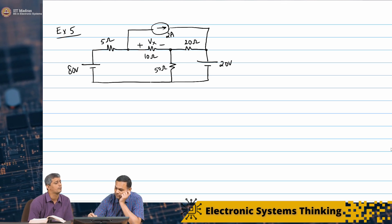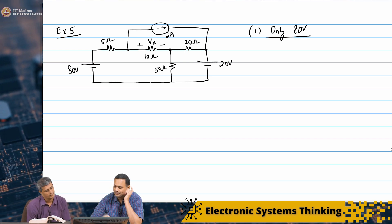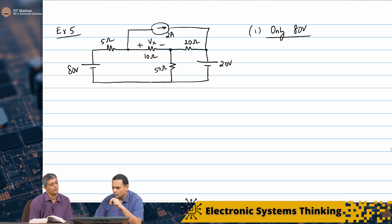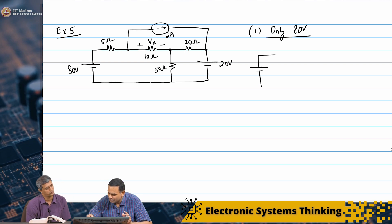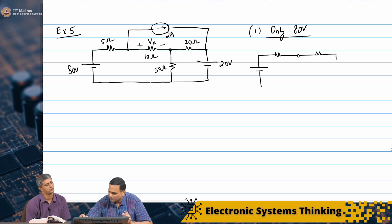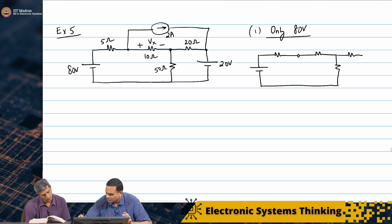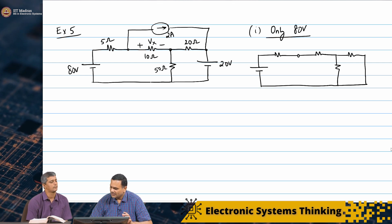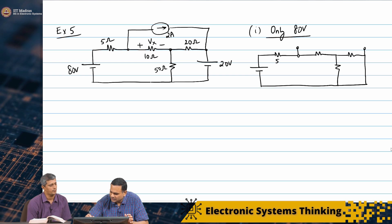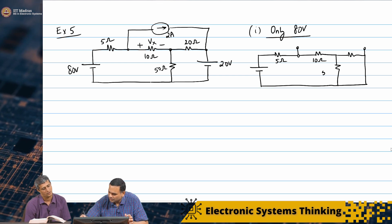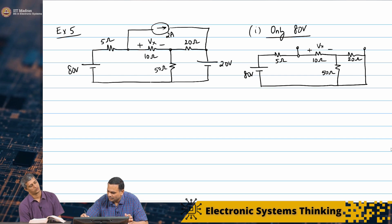So let us only keep the 80 volt source first. The 2 amp becomes an open circuit, and the 20 volt becomes a short circuit. My network becomes a little bit simpler. This is my primary loop — that does not change. The 20 volt becomes a short circuit, and the current source is an open circuit. So I have 5 ohms, 10 ohms, 50 ohms, and 20 ohms, with the 80 volt source. I am interested in Vx1.